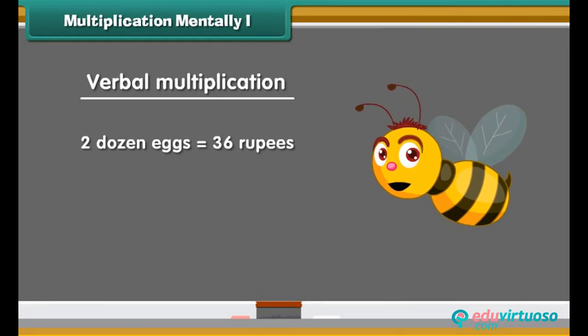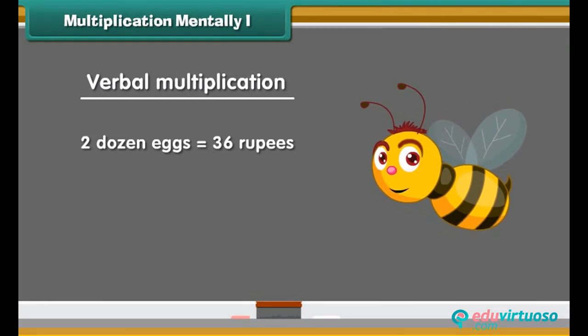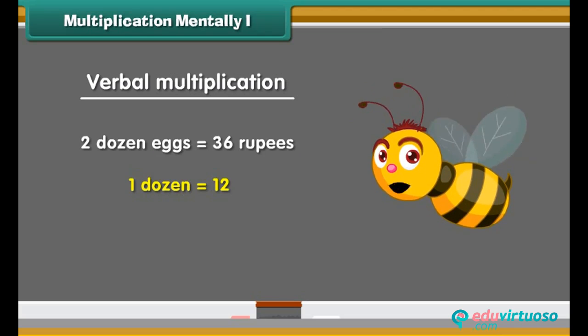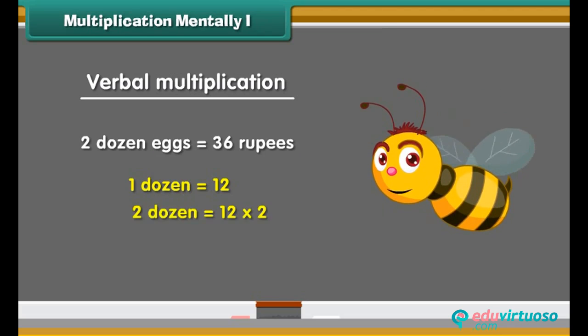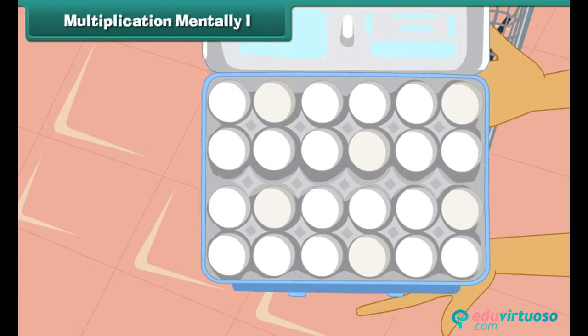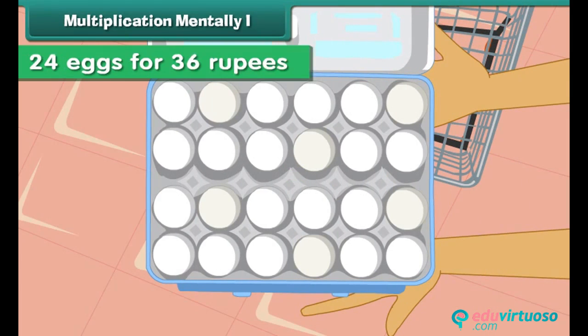Jennifer buys 2 dozens of eggs for 36 rupees. How many eggs did she buy? We know 1 dozen equals 12. Therefore, 2 dozen will be equal to 24. Thus, Jennifer bought 24 eggs for 36 rupees.